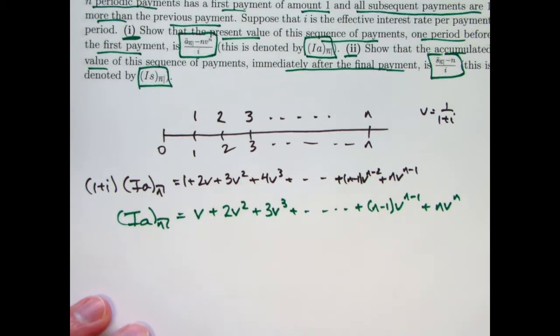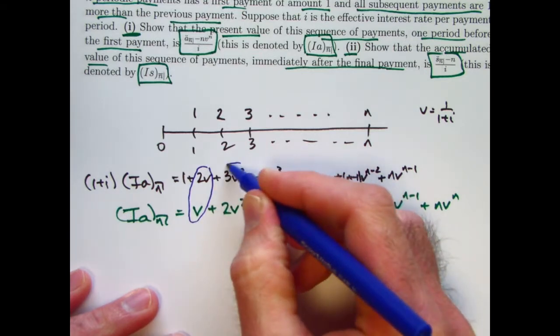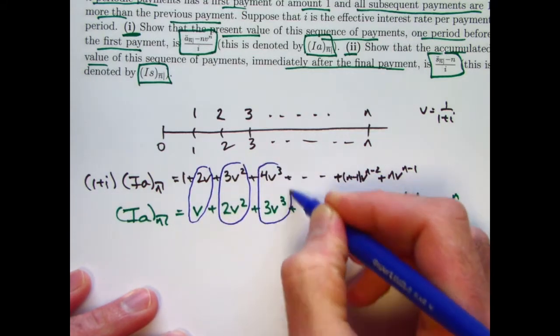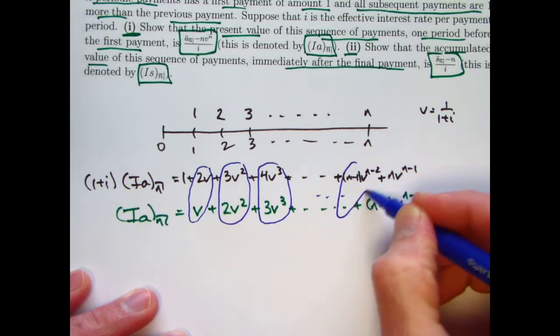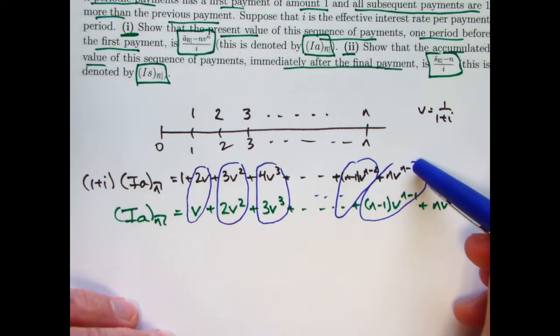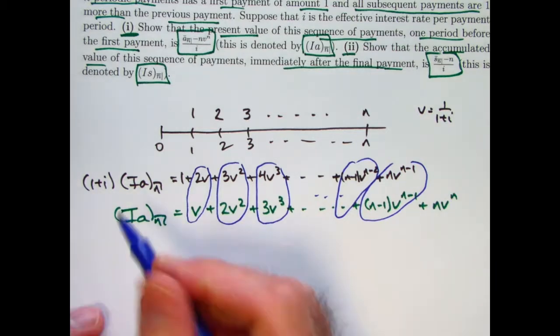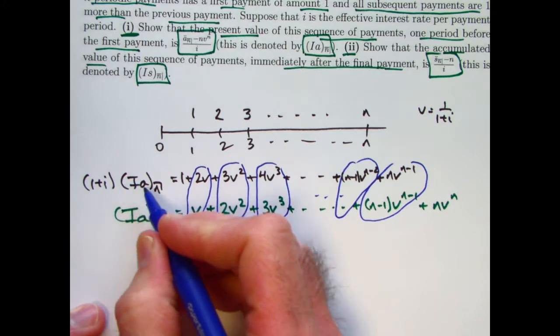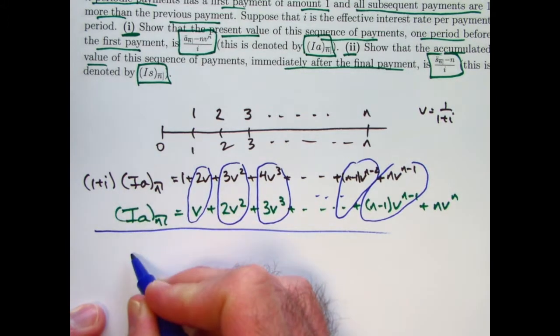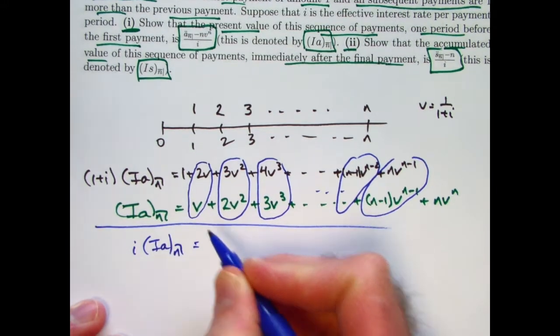Now compare these two series. And I purposely tried to put like powers of v directly above each other. Here, what do you see? You see a nice relationship between these. And in fact, if you subtracted the bottom series from the top, you'd get not complete cancellation, but partial cancellation. That might be a nice kind of partial cancellation. And on the left side, you'd get the (Ia)_n's canceling. You'd be left with when you subtract i times (Ia)_n. Again, we get partial cancellation.